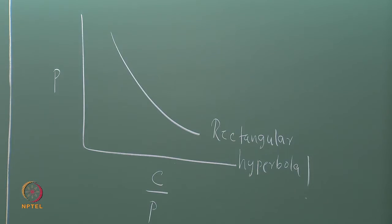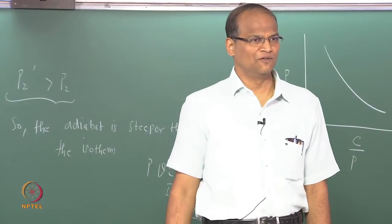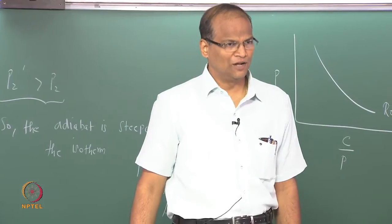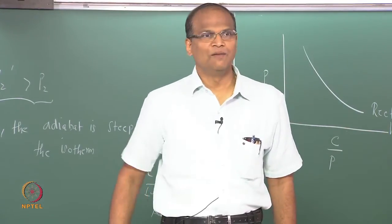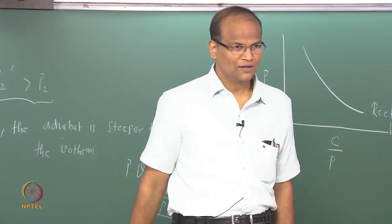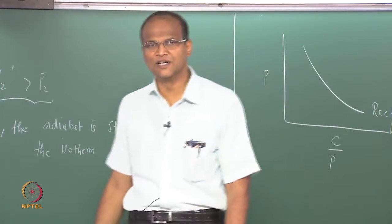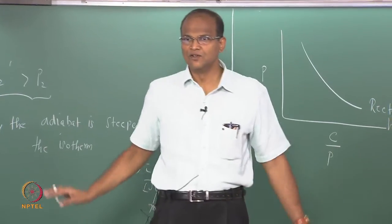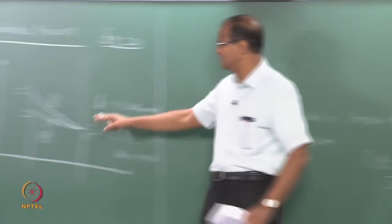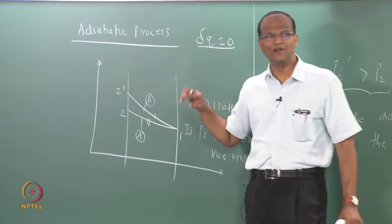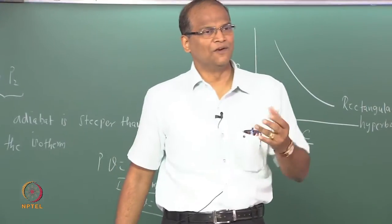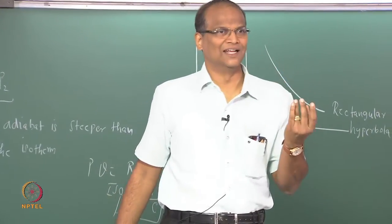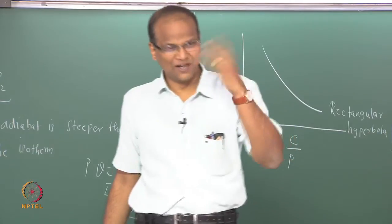We already know that PV to the power of gamma is constant, but let us pretend that we do not know that and prove it. For the general polytropic process, PV to the power of N is constant. What is N in the case of an adiabatic process? We will figure that out. But first, we need to introduce the concept of air parcel.